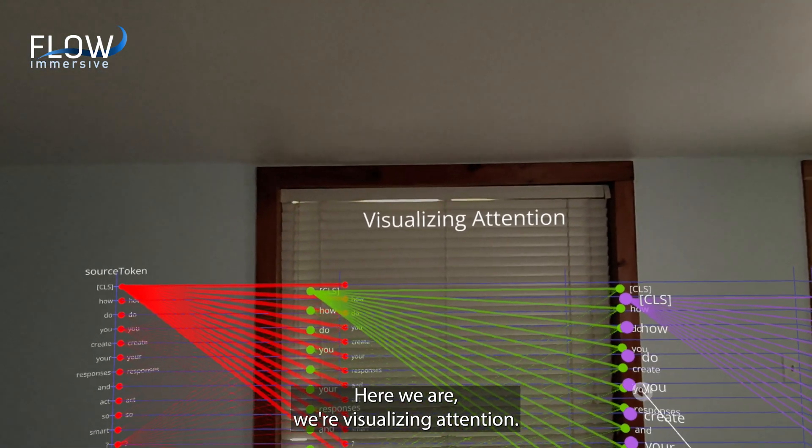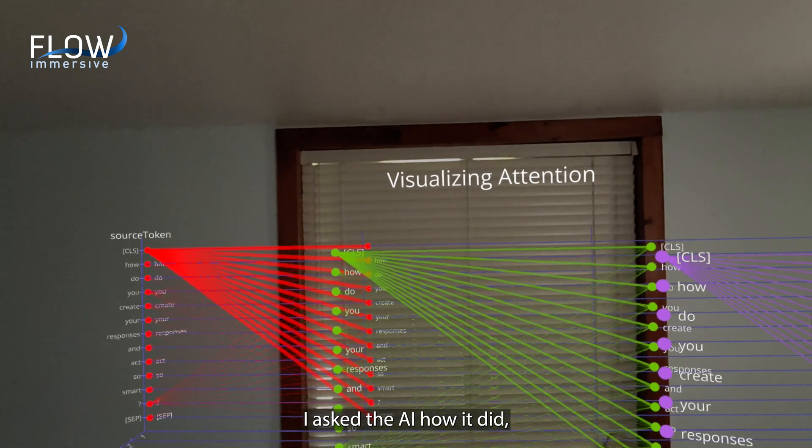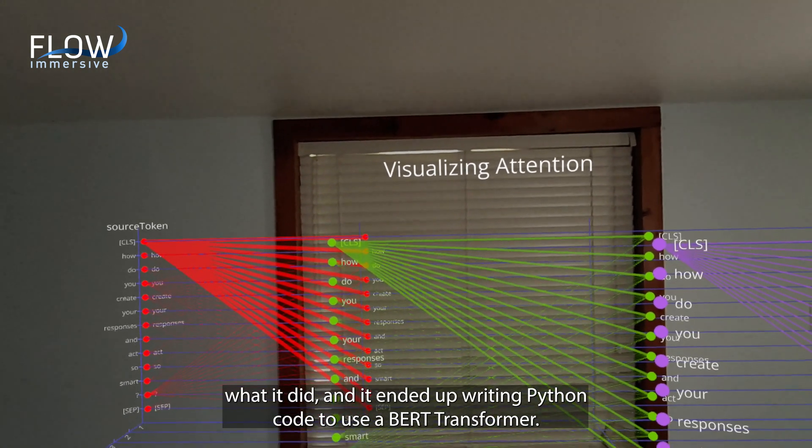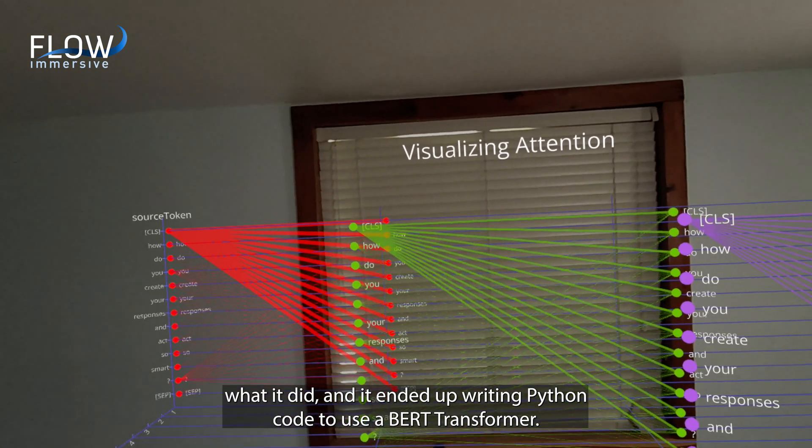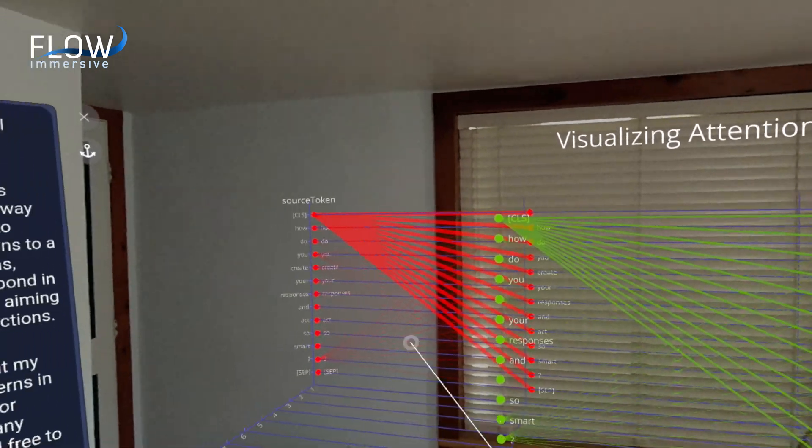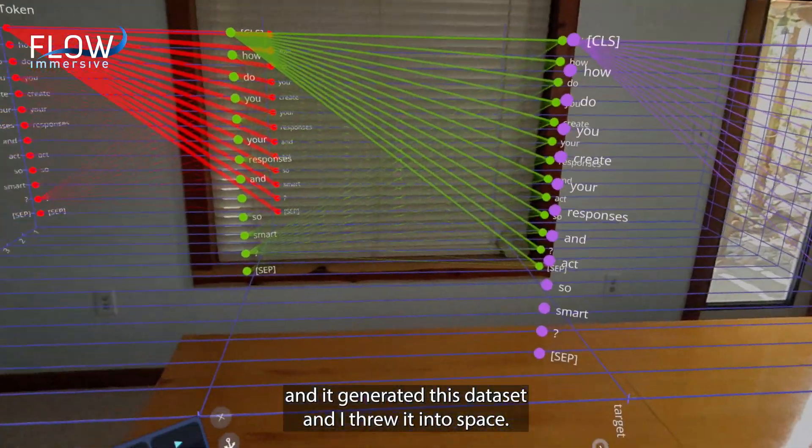Here we are, we're visualizing attention. I asked the AI how it did what it did and it ended up using Python code to write a BERT transformer and it generated this data set and I threw it into space.